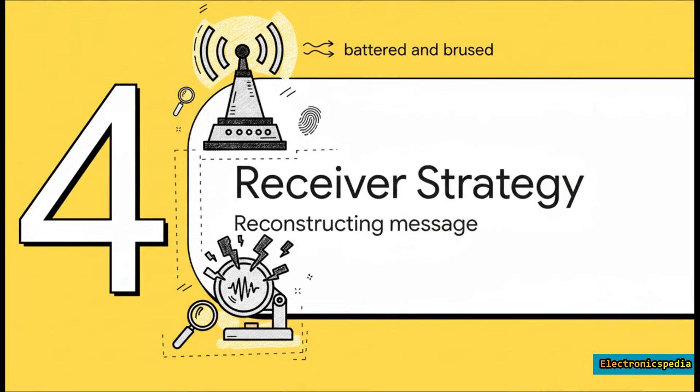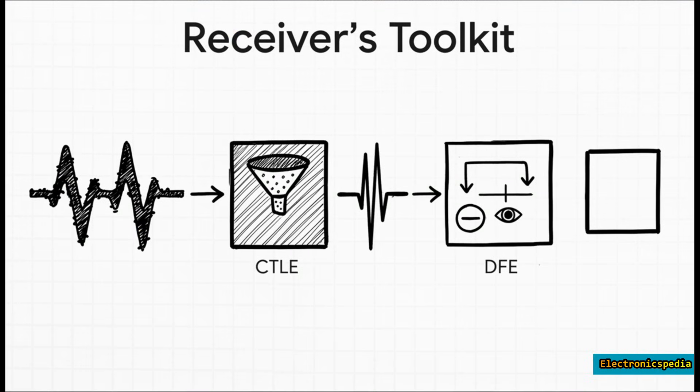Now let's flip to the receiver. It's gotten a signal that's been prepped by the transmitter, but it's still been battered by its journey. Its job is to perform digital forensics to piece the original message back together. The receiver has a powerful toolkit: First it uses a filter, the technical term is CTLE, to boost the high frequency parts that got weakened during travel. Then it uses a clever feedback loop called a DFE that learns from the bits it's already decoded and uses that to subtract the echo from the incoming signal. The goal is to reconstruct a clean, perfect digital signal from the messy analog one it received.